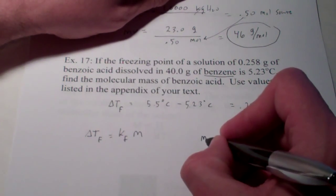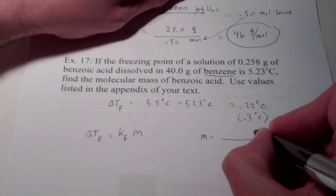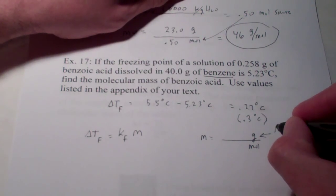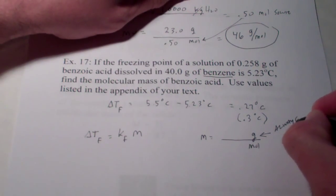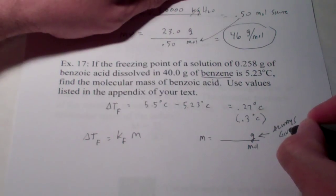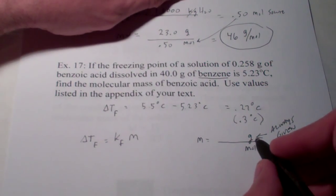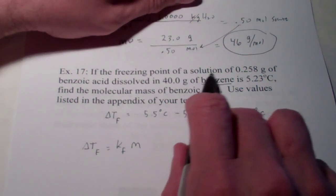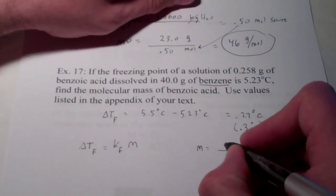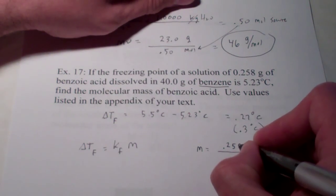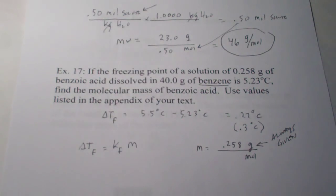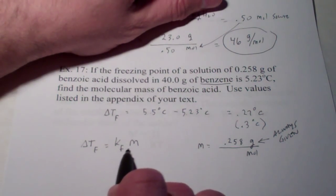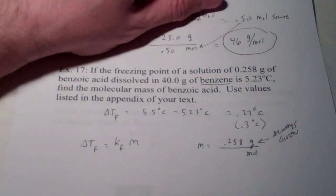Now, to find molecular weight, remember, we need to know two things: grams and moles. And remember, grams is always given in the problem. We just have to find it. So, let's read the problem and let's find out how many grams of solute we have. The freezing point of the solution. We have 0.258 grams of benzoic acid. And that's what we want to find the molecular weight of. So, that was given. So, we need to find moles. What part of this equation can we solve for to help us find moles? Think about that for a second.